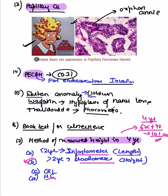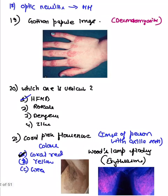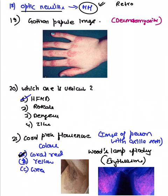A question on optic neuritis was asked — it is seen in multiple sclerosis. There are three types: retrobulbar, papillary, and papillitis — discussed in the ophthalmology rapid revision video. An image of Gottron papilla was also shown, which has also been previously discussed.